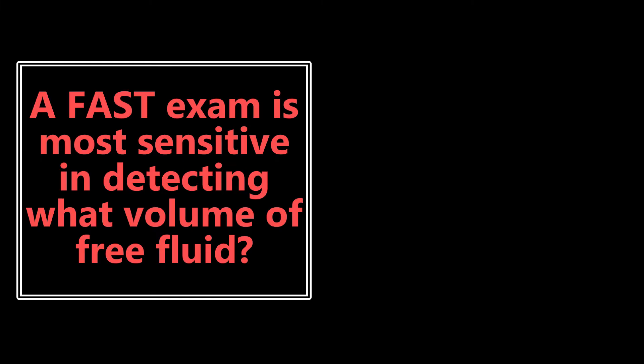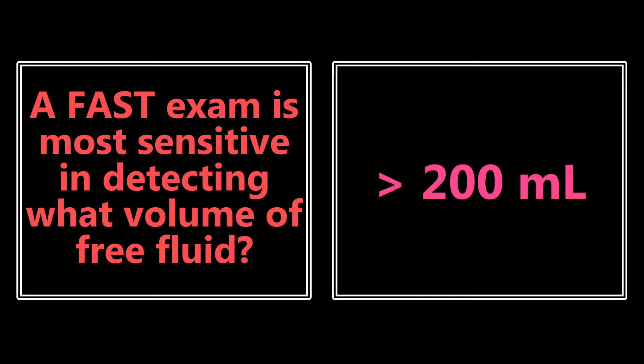A FAST exam is most sensitive in detecting what volume of free fluid? It is greater than 200 milliliters. We do the FAST exam all the time — if there's a large volume of fluid, specifically greater than 200 milliliters, that is very sensitive. If it's less than that, it can be a little less sensitive, so really want to know that distinguishing number.